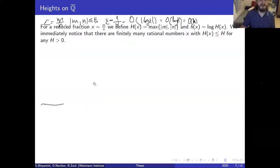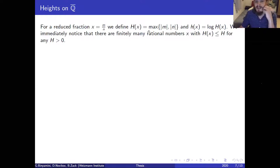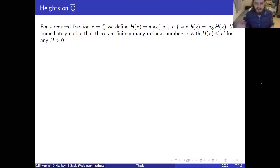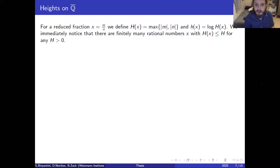Now let's talk about heights. If we have a reduced fraction, we define its height to be the maximum among the numerator and denominator in absolute value, and the logarithmic height to be the logarithm of the height. If you bound h and ask how many rational numbers have height smaller than h, the answer is finite — asymptotically it grows like h². The question of arithmetic geometry is: given an algebraic variety definable over ℚ, what is the structure of its rational points?